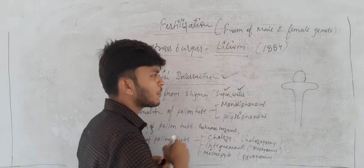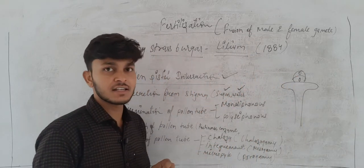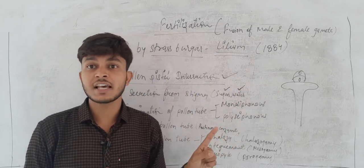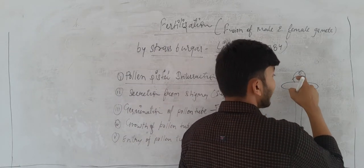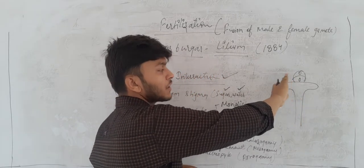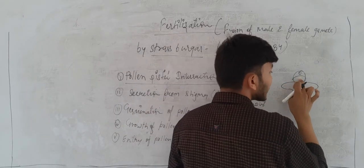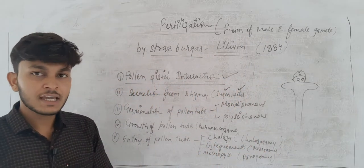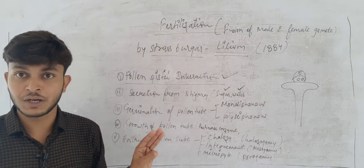The third event is germination of the pollen grain. The pollen grain has two cells: one is the generative cell and the second is the vegetative cell. The generative cell undergoes meiotic division, and after division two nuclei are formed. So the pollen grain effectively has three cells.